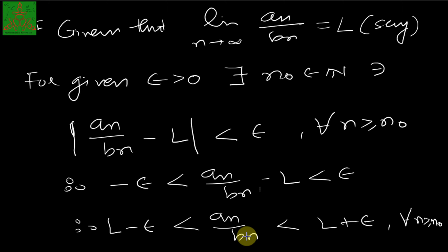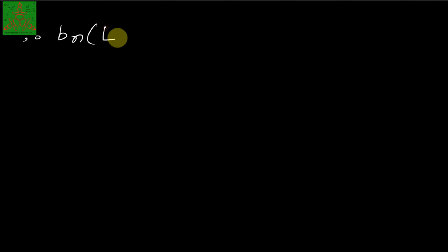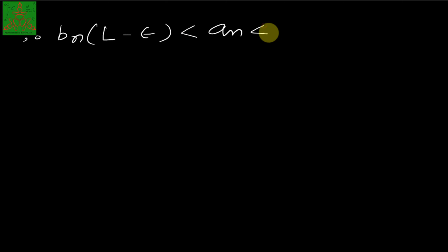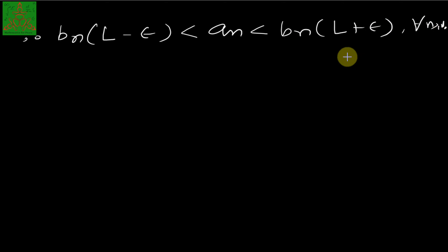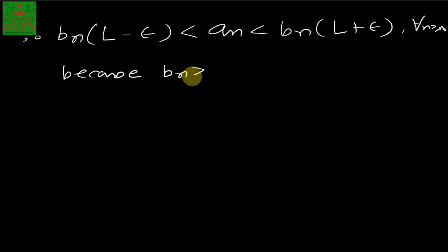Since Bn is positive, we may multiply Bn to both sides. This gives us: Bn(L − epsilon) ≤ An ≤ Bn(L + epsilon), for every n greater than or equal to N₀. This inequality holds because Bn is a positive term series.